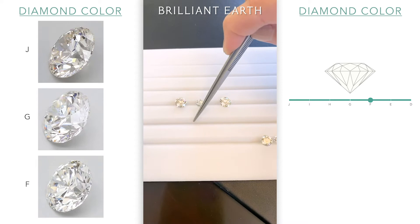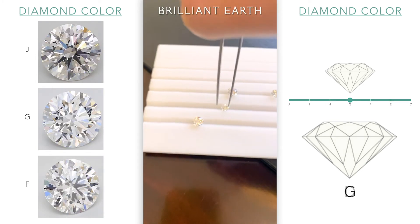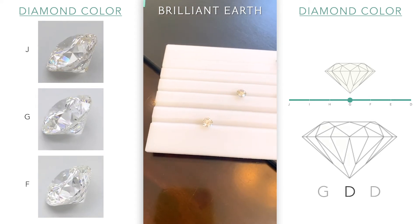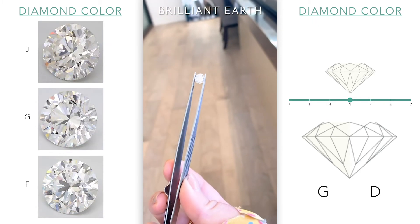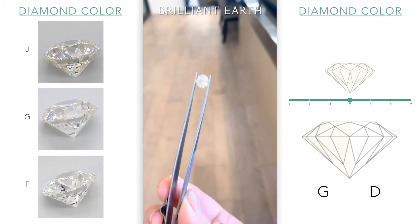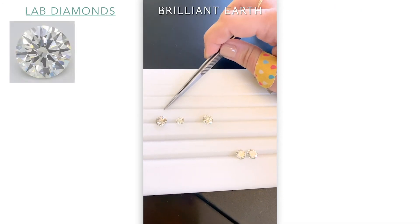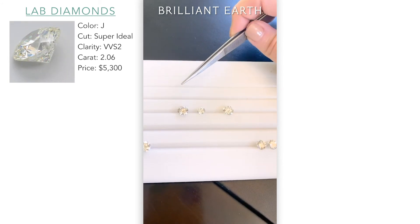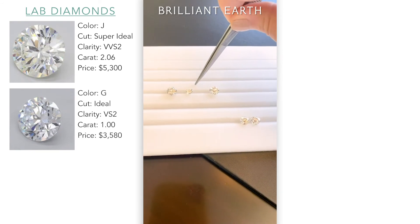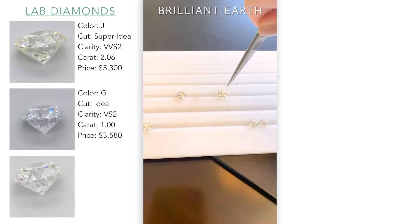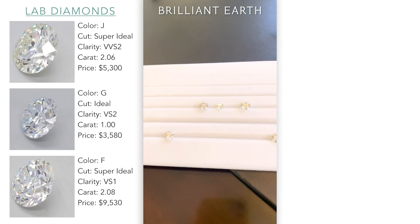This one is what we call the jeweler's sweet spot — it tends to be a really good value because you are just outside the colorless family. You don't necessarily pay for a colorless diamond, but you get a lot of the elements of colorless since it's only just outside. You're going to see a lot of pretty fire in that. For reference: 2.06 lab created J super ideal VVS2; 1 carat lab G VS2 ideal; and 2.08 carats F VS1 super ideal.